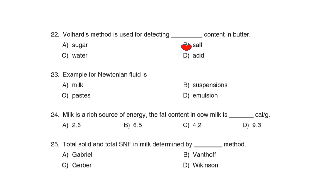23rd Question: An example of a Newtonian fluid is Correct Answer: Option A: Milk. 24th Question: Milk is a rich source of energy. The fat content in cow milk provides dash calories per gram. Correct Answer: Option D: 9.3 calories per gram. 25th Question: The total solids and total SNF in milk are determined by dash method. Option C: Gerber method.